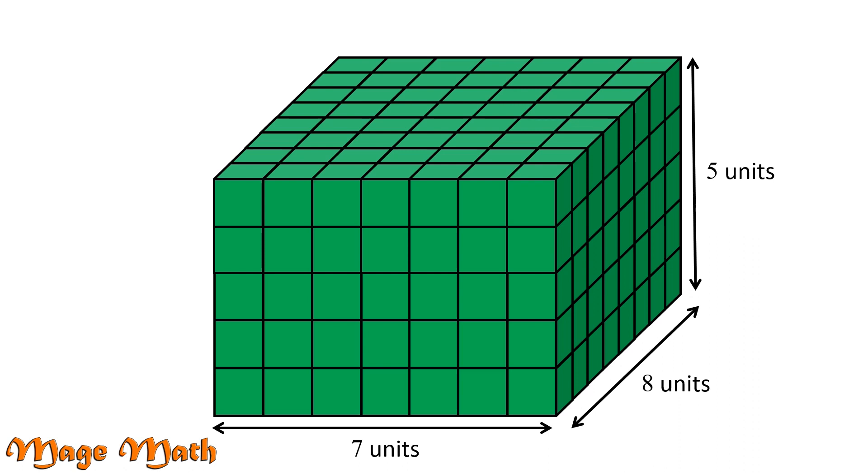Since volume equals length times width times height, we will substitute 7, 8, and 5 into our formula. Multiply 7 times 8 times 5, and that gives us 280 units cubed. Great job! Are you ready for another challenge?